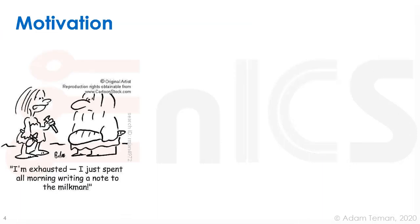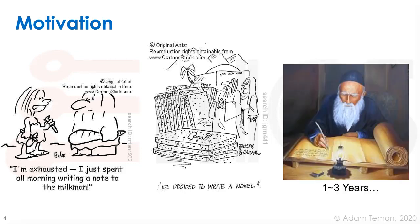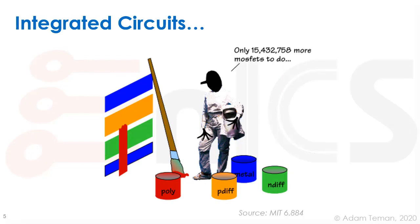Just some motivation behind this — I have a few cartoons to show this. We have a lady in the stone age who went to write a note to the milkman and came back exhausted because she had to write it in stone. Or a guy who wanted to write a whole book and it was heavy and took a long time. Even nowadays, writing a Torah scroll — the Jewish Bible — has to be handwritten by a rabbi, with no mistakes allowed, taking between one and three years. That doesn't work for integrated circuits. We have millions, maybe billions of transistors. This cartoon from MIT shows a guy painting MOSFETs — he just made one and has only 15,432,758 more to go.